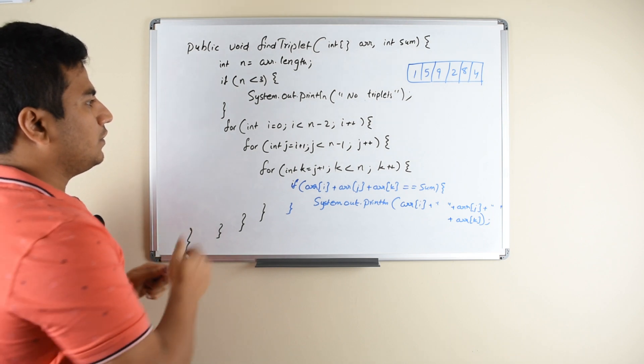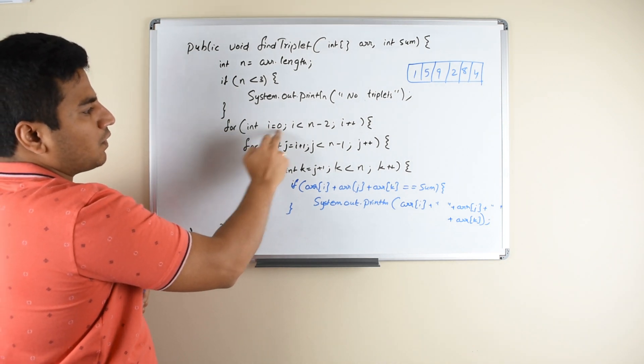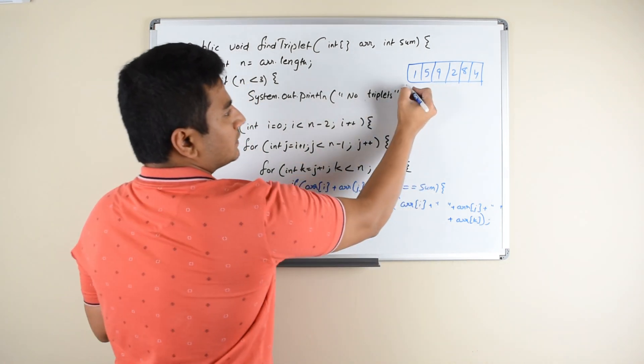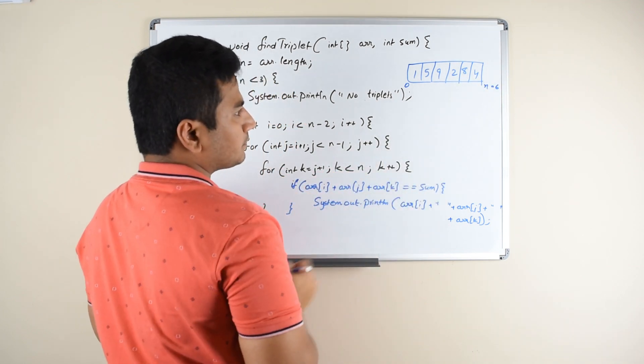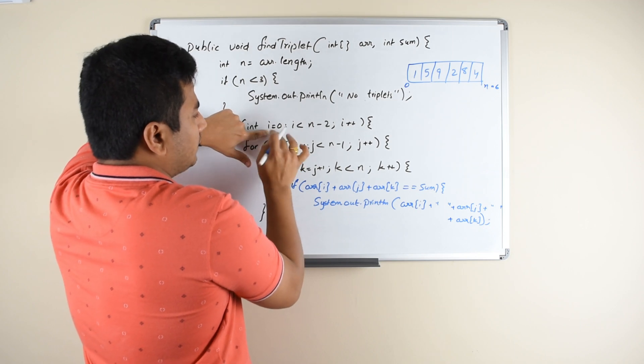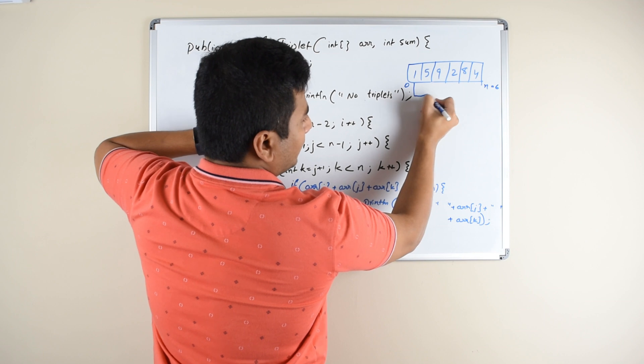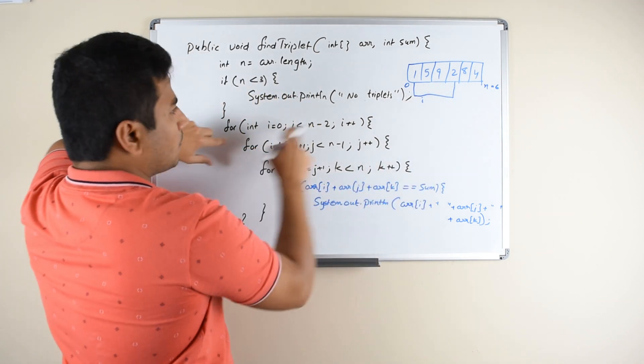What you are trying to do is find an element i in the elements between 0 and n minus 2. So if this is your array, this is the 0 position and this is some n position - in this case it equals 6. You are trying to find an element between 0 and n minus 2. So your i iteration will go from here until here. So this is i.